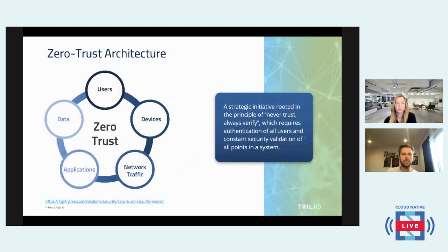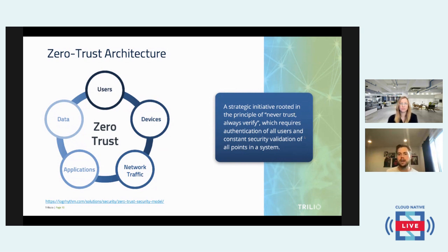Another important concept when thinking about your migration architecture from edge to core or core to edge is zero trust architecture, which we define as a strategic initiative rooted in the principle of 'never trust, always verify.' This essentially means constantly requiring authentication of all users within a Kubernetes cluster and application, and constantly validating the security of all possible vulnerable points within your system.